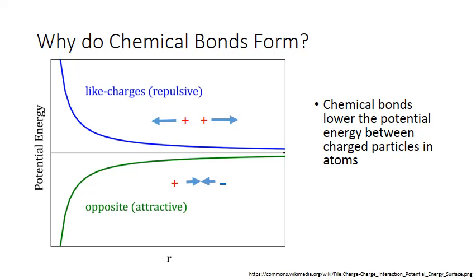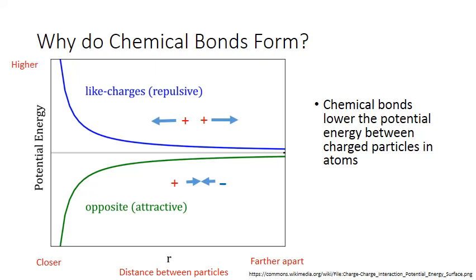In this potential energy diagram, R on the x-axis represents the distance between charged particles. Smaller values on the left indicate that the particles are close together, while larger values on the right indicate they're farther apart. The y-axis is potential energy of the particles, with high potential energy situations indicated at the top of the axis and lower potential energy situations at the bottom.